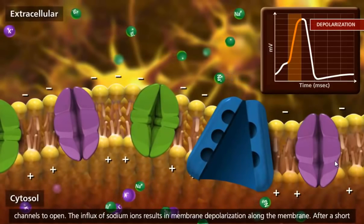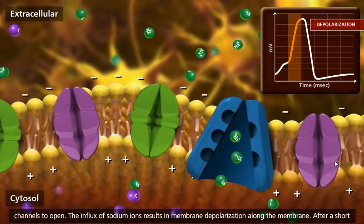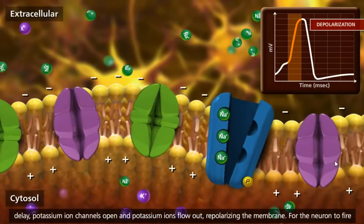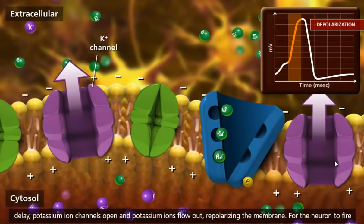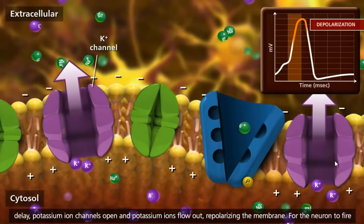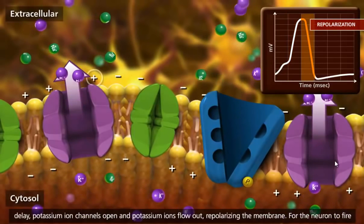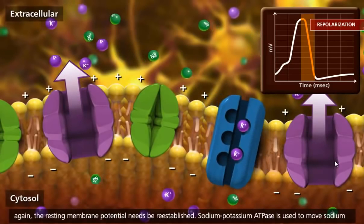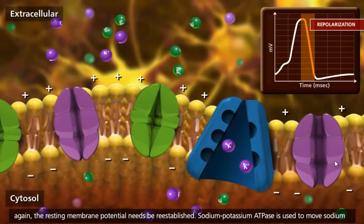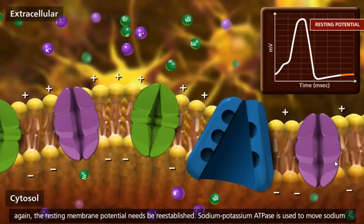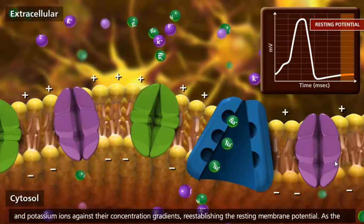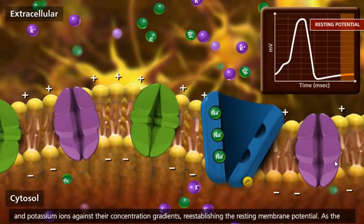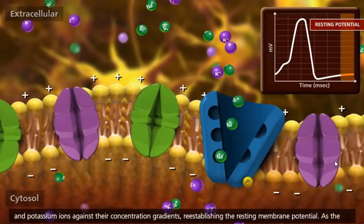The influx of sodium ions results in membrane depolarization along the membrane. After a short delay, potassium ion channels open and potassium ions flow out, repolarizing the membrane. For the neuron to fire again, the resting membrane potential needs to be re-established. Sodium-potassium ATPase is used to move sodium and potassium ions against their concentration gradients, re-establishing the resting membrane potential.